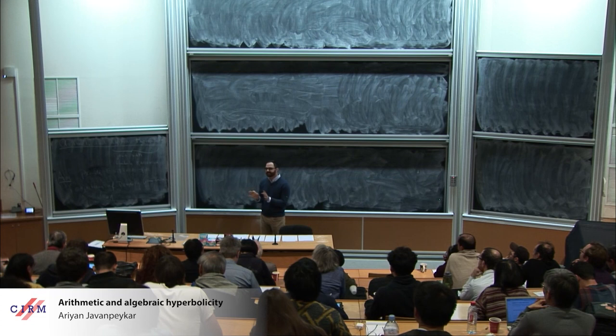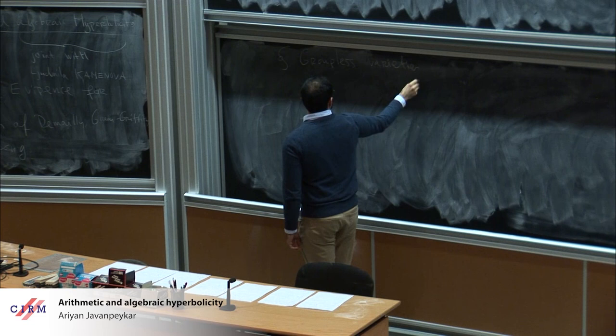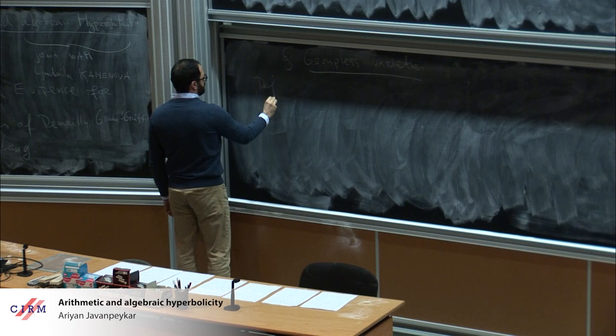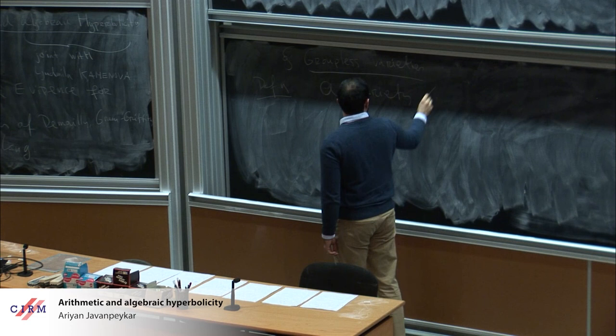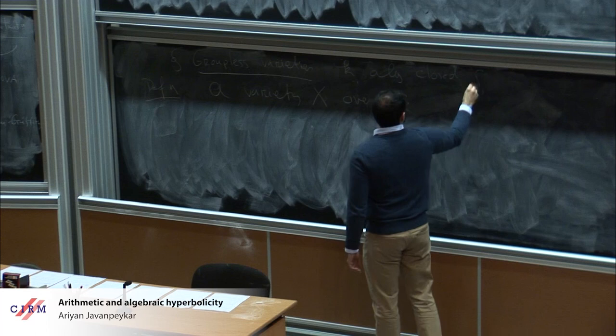I want to start with explaining the conjecture of Lang. There are several versions of it, and this is the most optimistic and also slightly controversial one. To explain it, I'll introduce what I would like to call groupless varieties. These are varieties which are very far from being algebraic groups. A variety x over a field k, where k will always be algebraically closed and of characteristic zero.